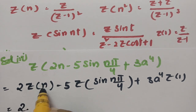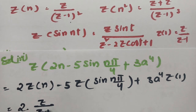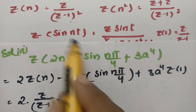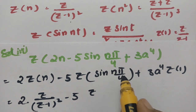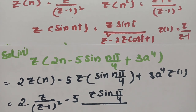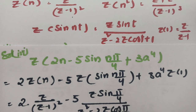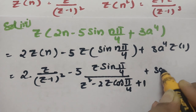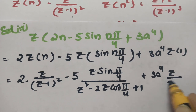Z{n} = Z/(Z−1)², so 2·Z{n} = 2Z/(Z−1)². For the sine term, substituting T = π/4: Z{sin(nπ/4)} = Z·sin(π/4) / (Z² − 2Z·cos(π/4) + 1). And Z{1} = Z/(Z−1), so 3a⁴·Z{1} = 3a⁴·Z/(Z−1).